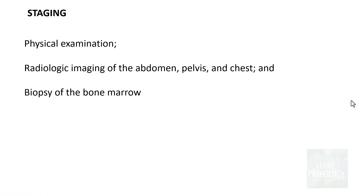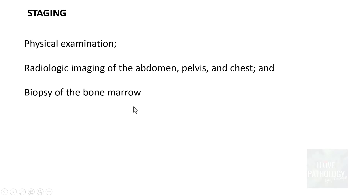What are the important things which help us in staging of Hodgkin Lymphoma? One is physical examination; two is radiologic imaging of the abdomen, pelvis, and chest; and finally, biopsy of the bone marrow to look for involvement of the bone marrow.